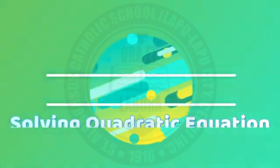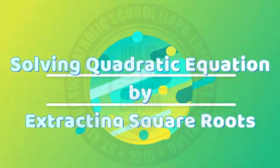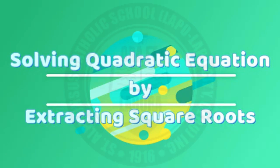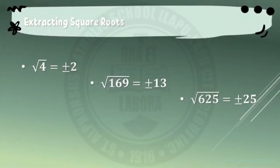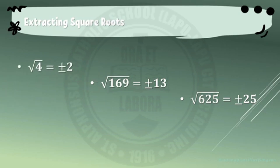Solving Quadratic Equations by Extracting Square Roots. In solving quadratic equations by extracting square roots, it is important to know how to simplify and extract roots of a number, such as square root of 4. The roots are positive and negative 2.